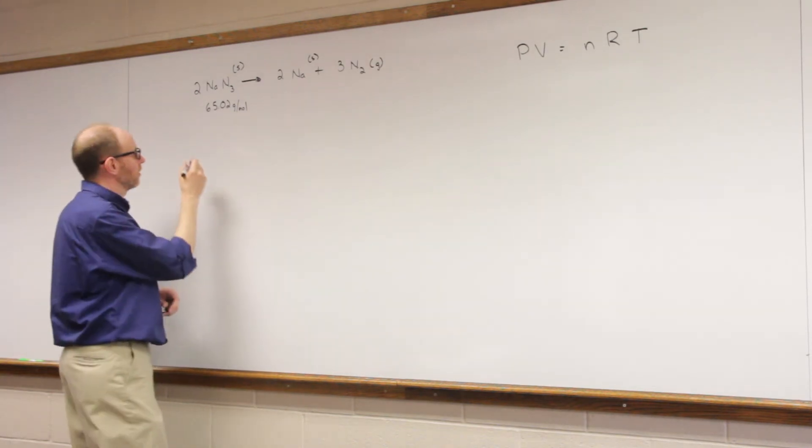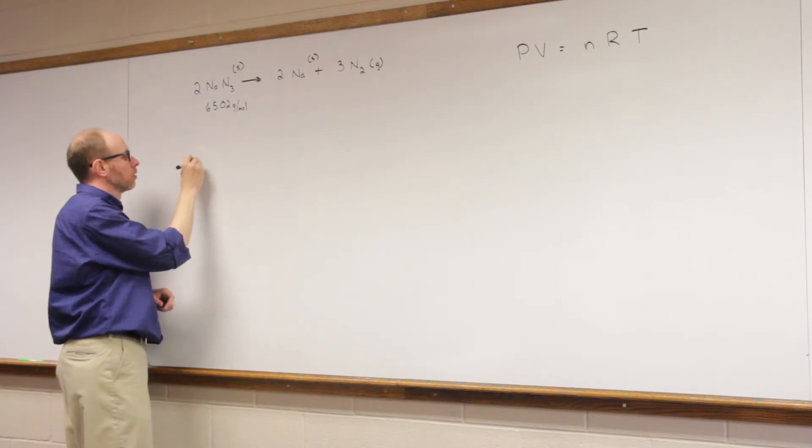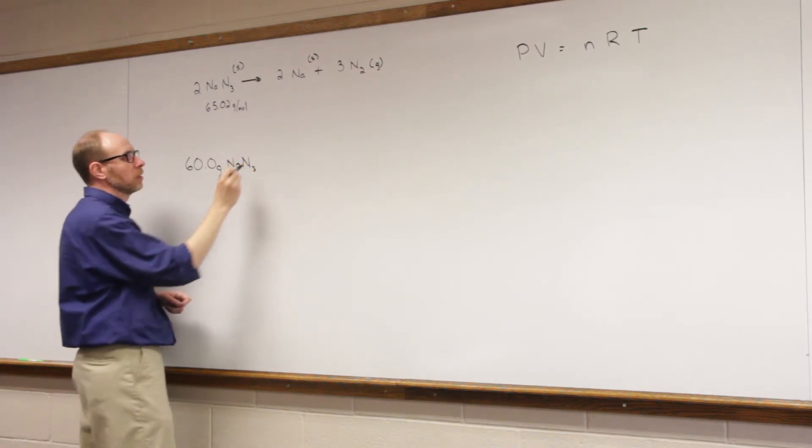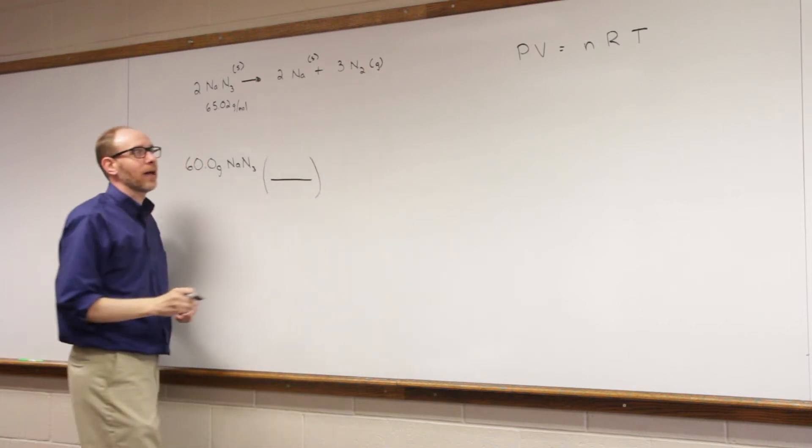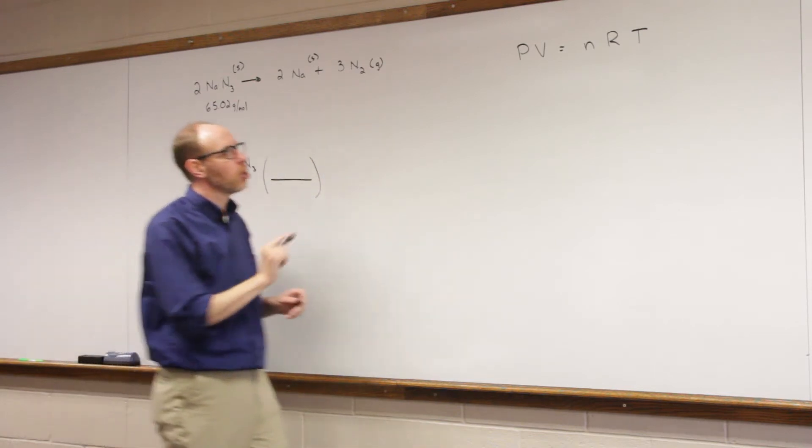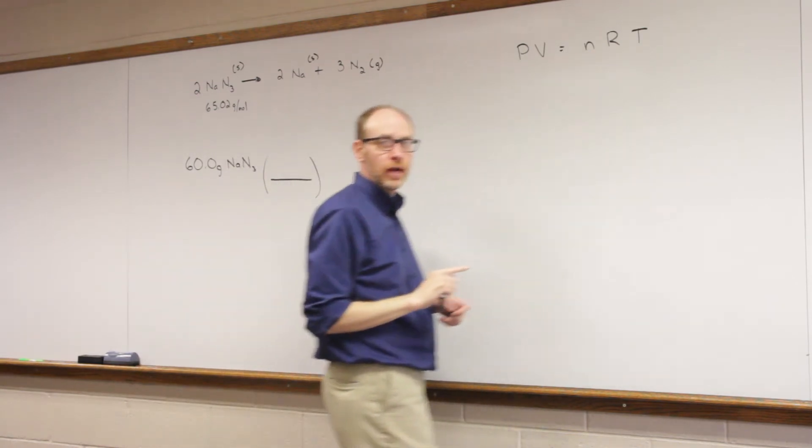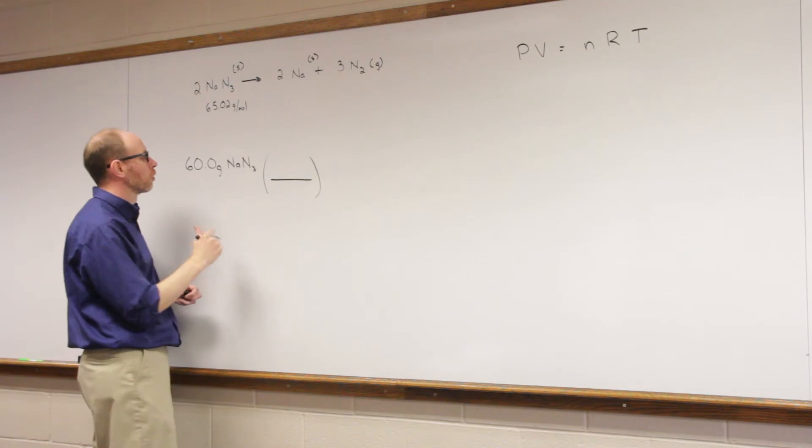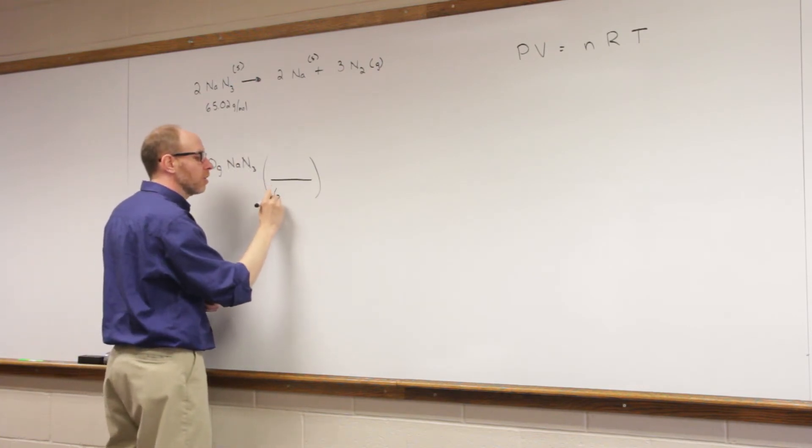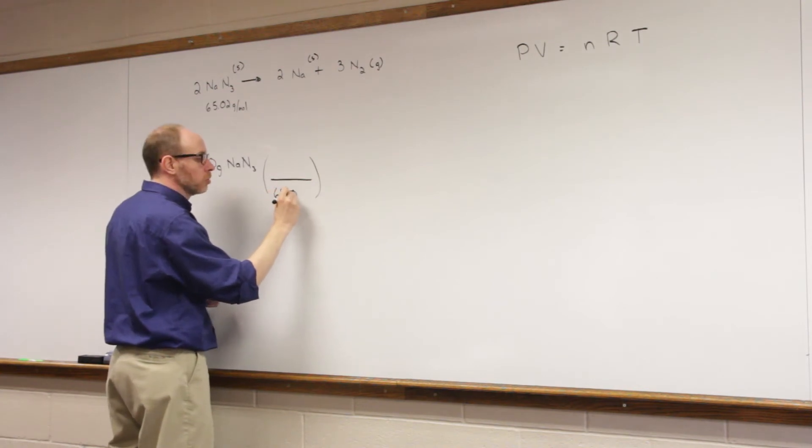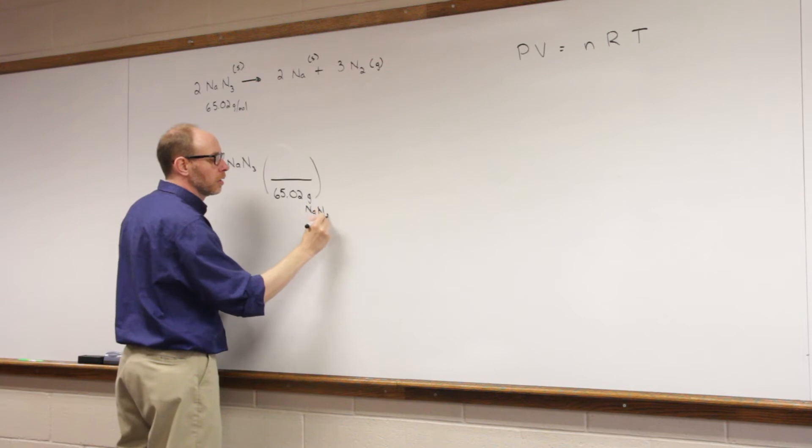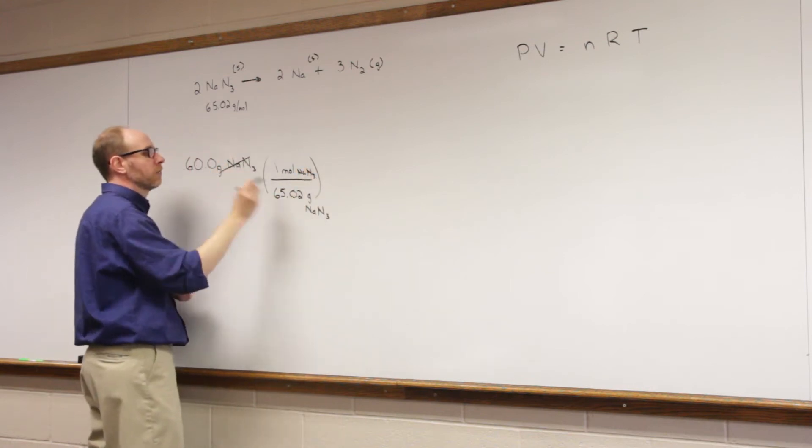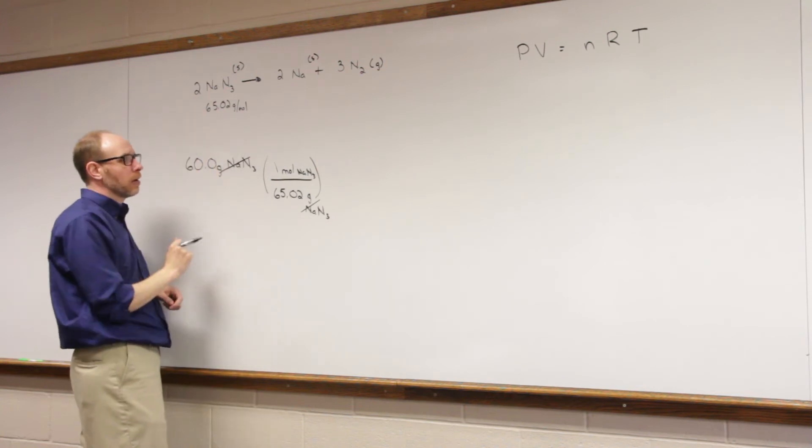We want to start with our 60 grams of sodium azide. What we want to do is calculate how much nitrogen gas. Now we could calculate how many grams, but we know already the ideal gas law is going to ask us for the number of moles of nitrogen gas. So we're just going to stop with moles of nitrogen gas, which is going to make our calculation one step quicker than it would be normally. The molar mass of sodium azide is 65.02 grams of sodium azide in one mole. So now I've calculated how many moles of sodium azide that I am reacting.